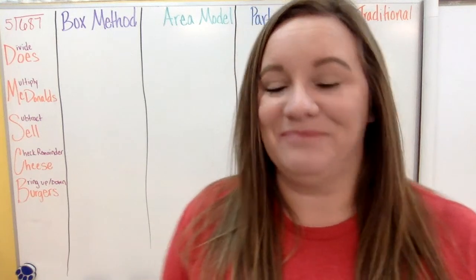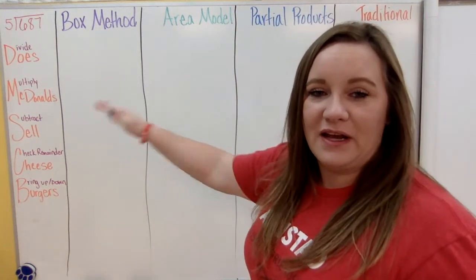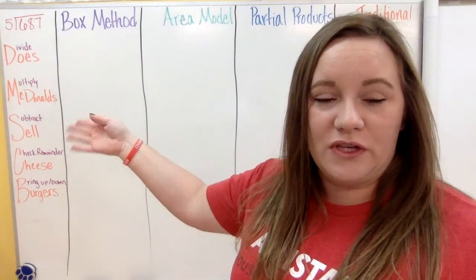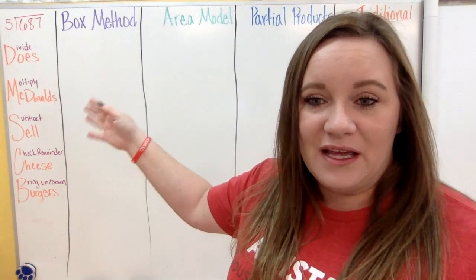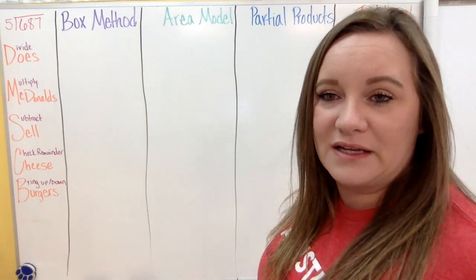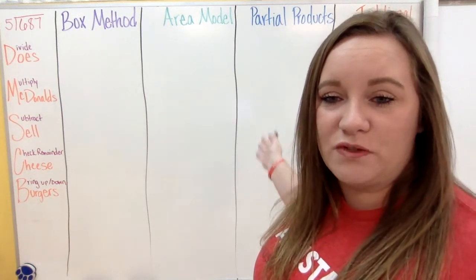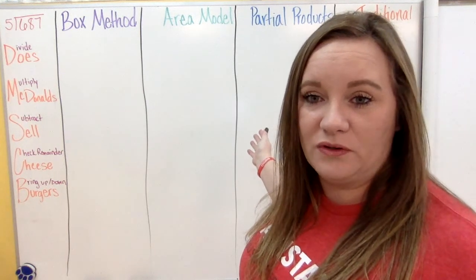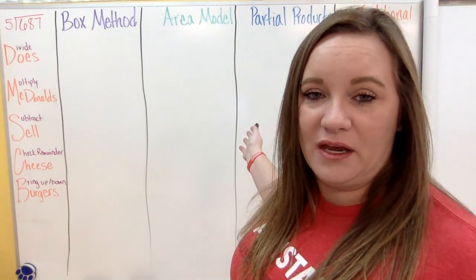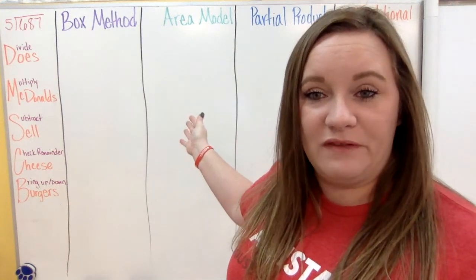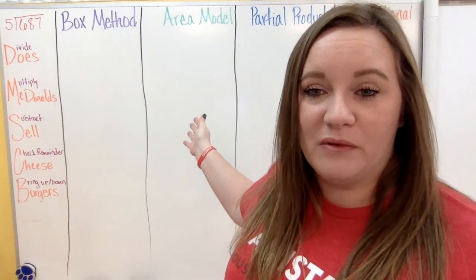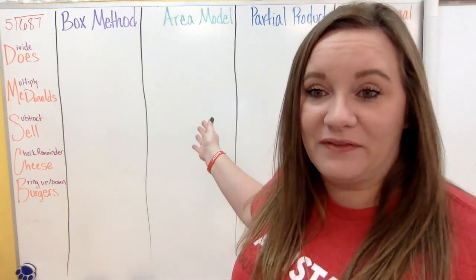The progression I have here is typically the easiest for students to learn. They first learn the box method, then move to the area model, then partial products, and finally traditional. If they move to one and it's really difficult, just do the few problems required in that method, then move them back to the one they feel most comfortable with.